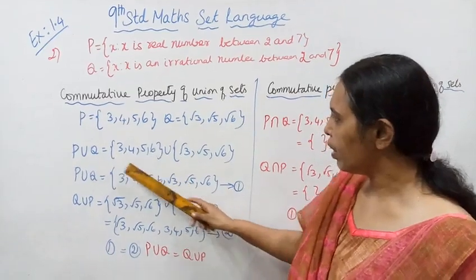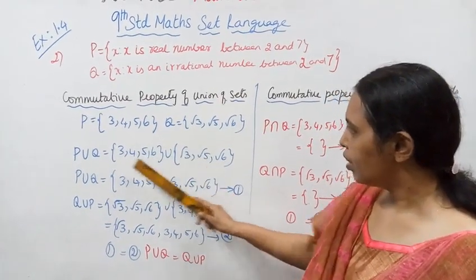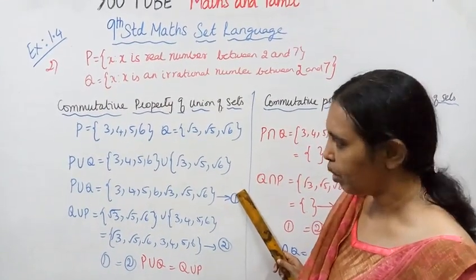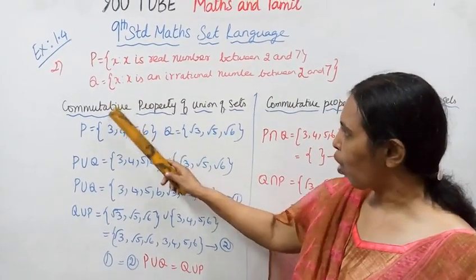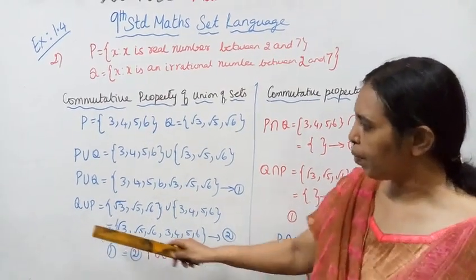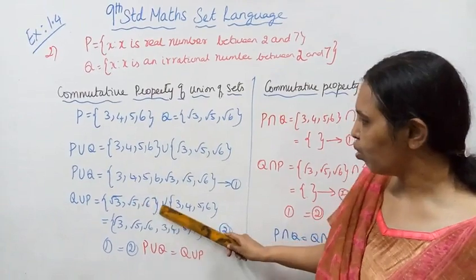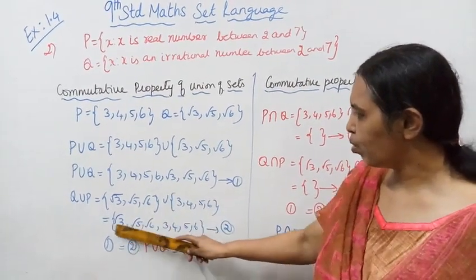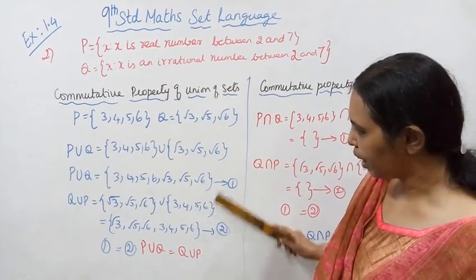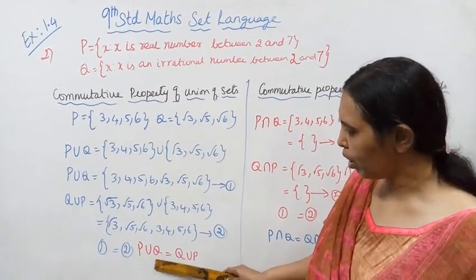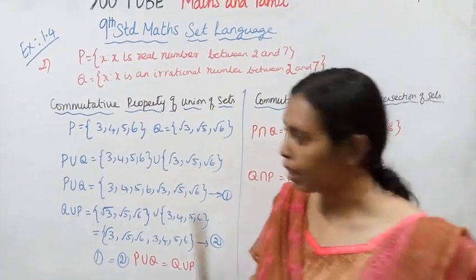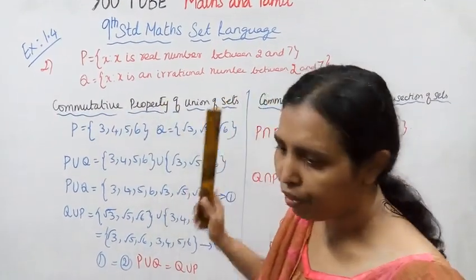P union Q equals {3, 4, 5, 6, √3, √5, √6}. For Q union P, Q comes first: {√3, √5, √6} union {3, 4, 5, 6}. Both results are equal. Therefore, P union Q equals Q union P — the commutative property of union of sets is verified.